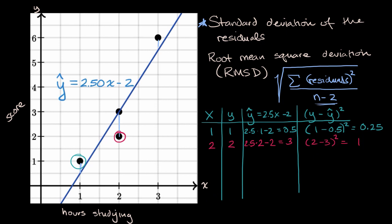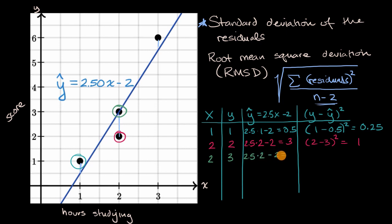Then the point (2, 3). Our estimate from the regression line is 2.5 times two minus two, which equals three. So our residual here is zero — you can see that that point sits on the regression line. It's (3 minus 3) squared, which equals zero.